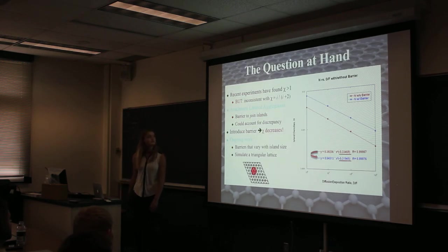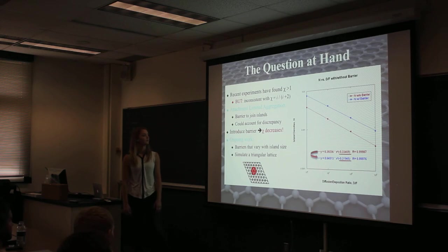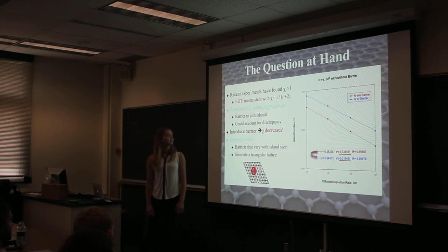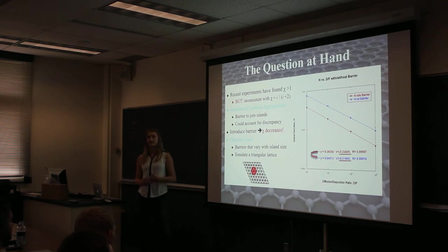The real question is that recent experiments have found chi's that are greater than 1, and so this is clearly inconsistent with this chi equals i over i plus 2, so you can never get anything greater than 1 with that equation. A possible explanation is this attachment-limited aggregation in which there are barriers to join islands, and that just refers to an energetic barrier where it's not energetically favorable to join the islands, so the probability that a monomer joins the island is decreased. This could account for the discrepancy.